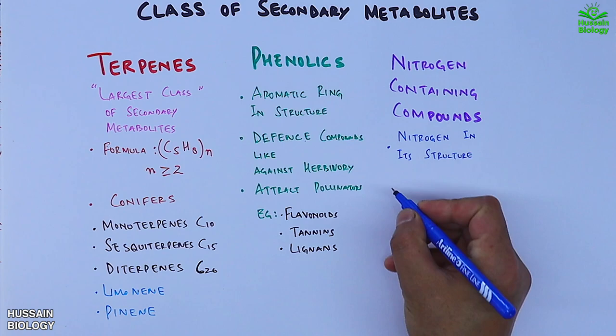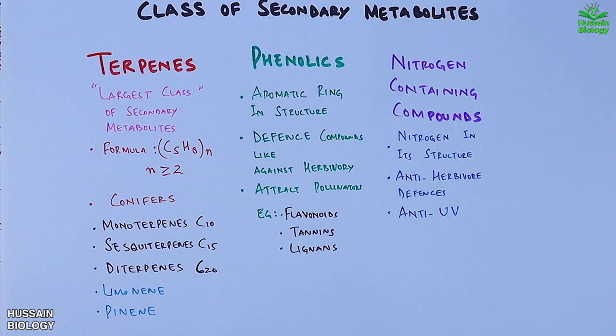Then we have nitrogen-containing compounds in which nitrogen is found in its structure. These compounds have also anti-herbivory property and acts against UV damage. Examples include morphine, glucosinolate and lupinene.